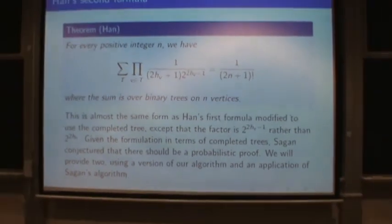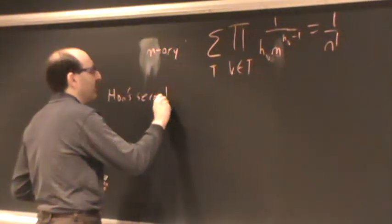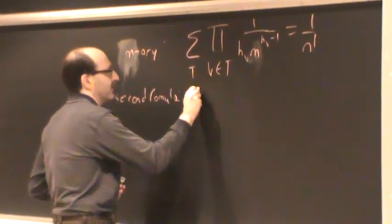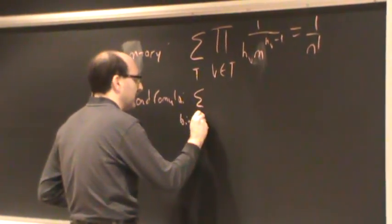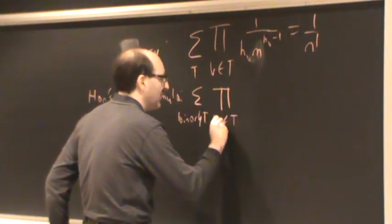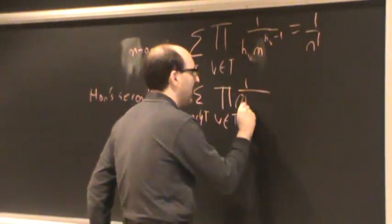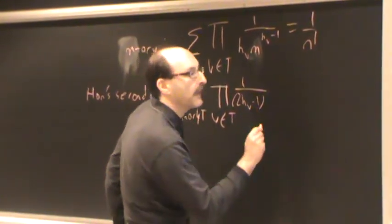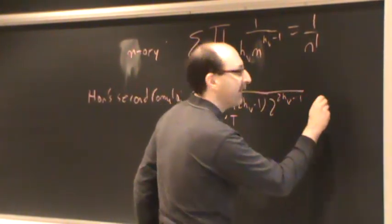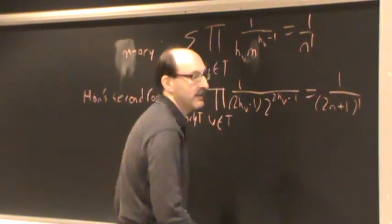I will leave this on the board because we refer to it frequently. Sum over binary trees T, product over all vertices of the tree, 1 over 2Hv minus 1, times 2 to the 2Hv minus 1, is equal to 1 over the quantity 2n plus 1 factorial.